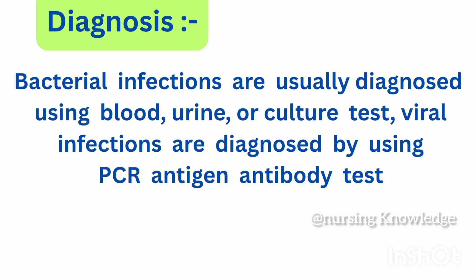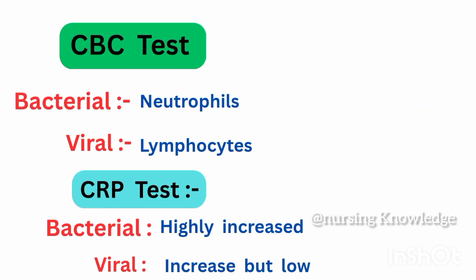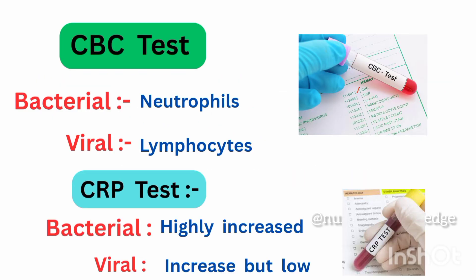Diagnosis: Bacterial infections are usually diagnosed using blood, urine, or culture tests. Viral infections are diagnosed using PCR, antigen, or antibody tests. On the CBC test, bacterial infection shows elevated neutrophils, while viral infection shows elevated lymphocytes.